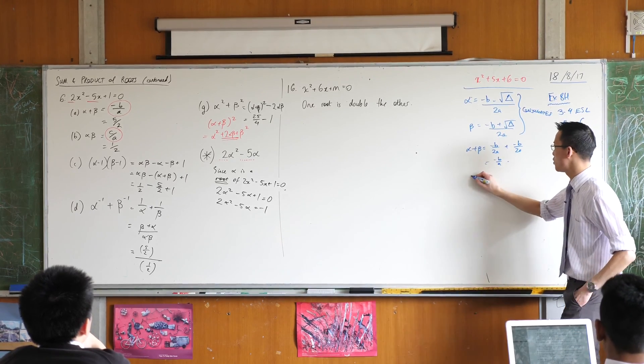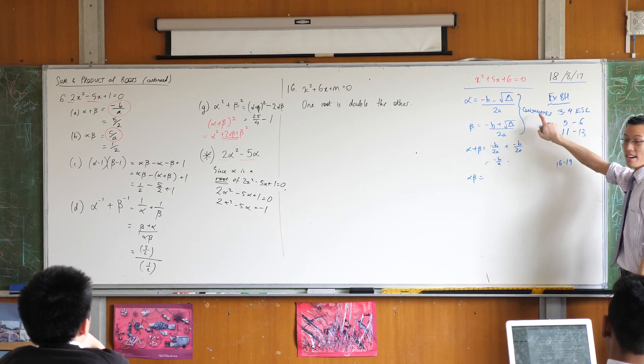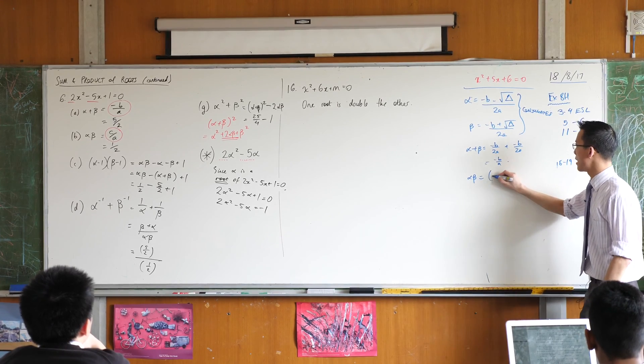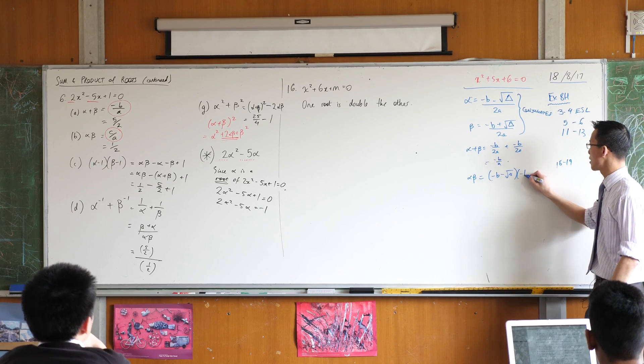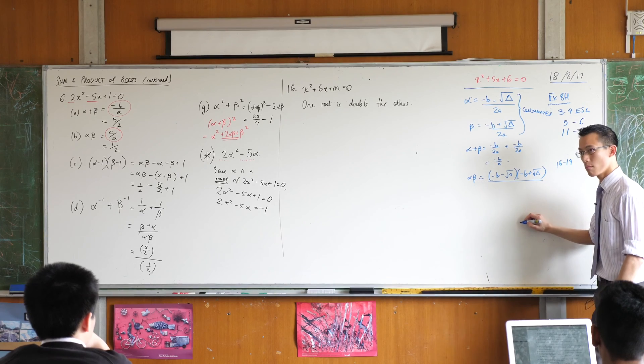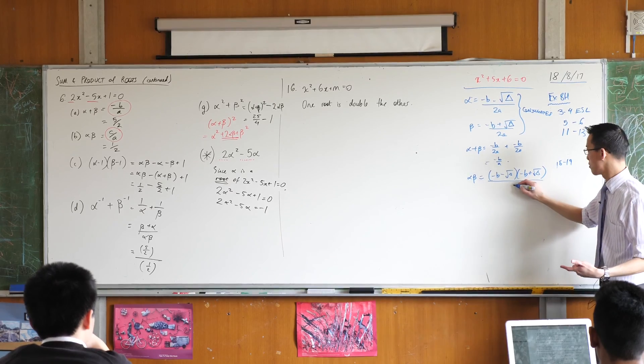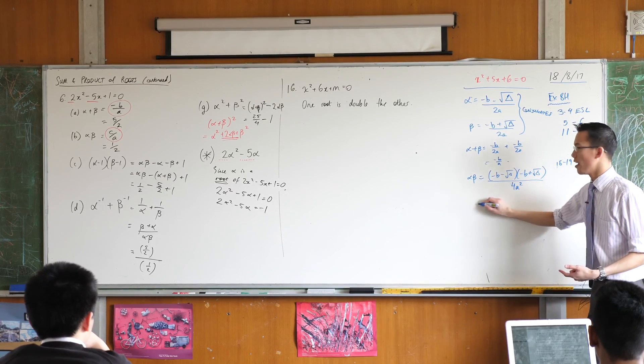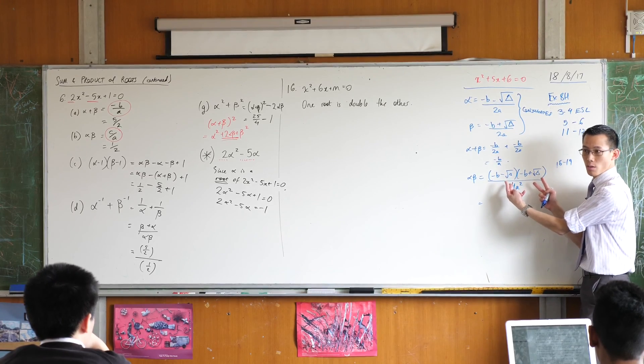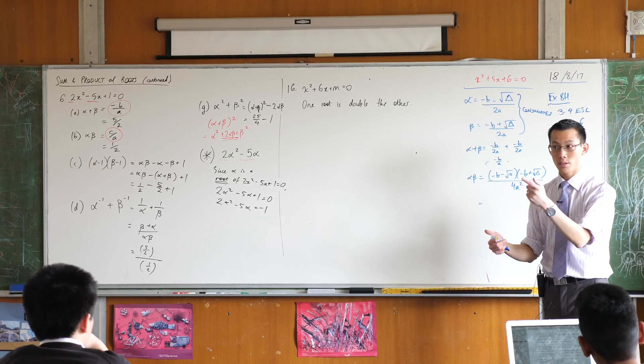The same thing happens when you do the product. It looks like it's going to be disastrous, but remember, they are conjugates, so we should have some faith that this is going to come out nicely. This is going to be this guy and this guy on the top. What's going to be on the bottom? 4a squared. Now again, this looks terrible, but hold on, they're conjugates. So what happens to these guys? What is this factorization of? This is difference of squares.